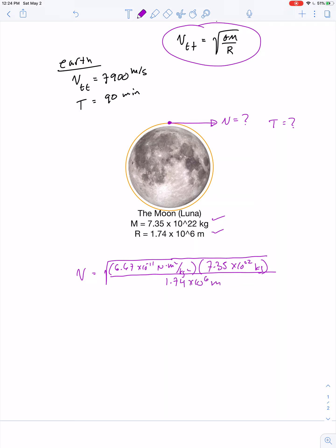But before we calculate, let's check the units. Meters cancel one of the meters. Kilograms cancel one of the kilograms. And if you substitute what you know a newton is equivalent to, a kilogram meter per second squared, then you can see that the remaining kilogram will cancel out and we'll be left with meters squared per second squared and the square root of that will be meters per second.